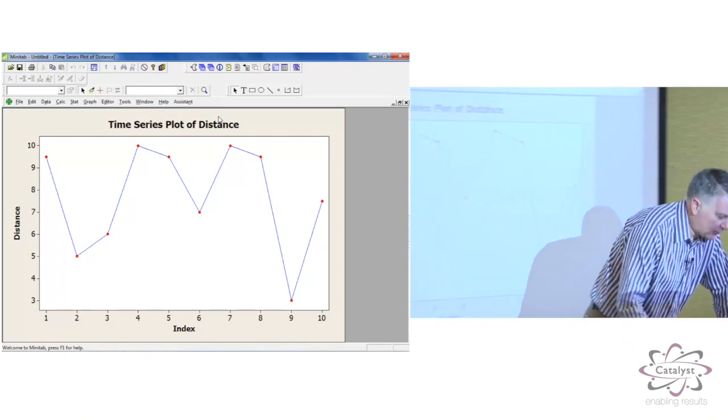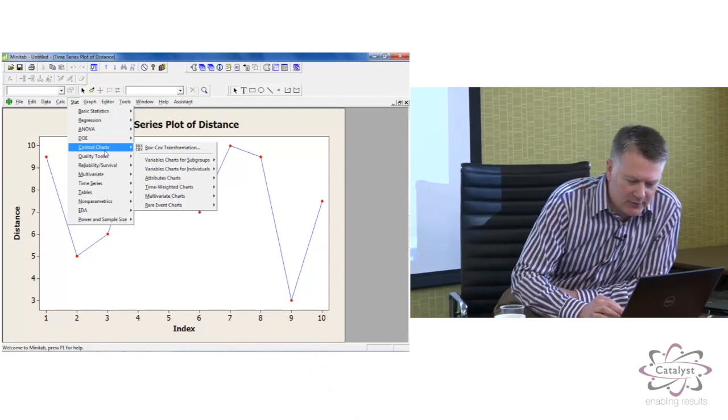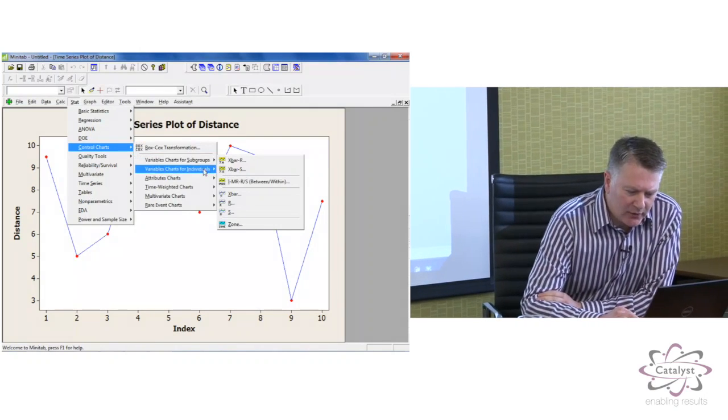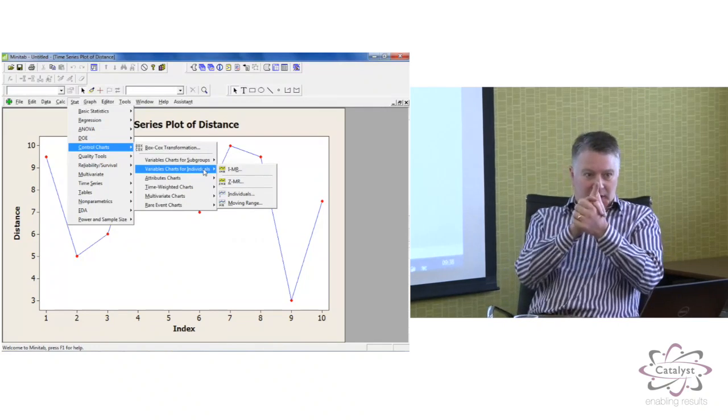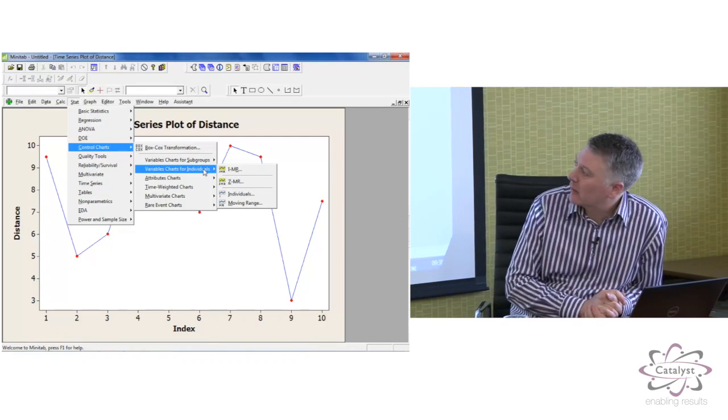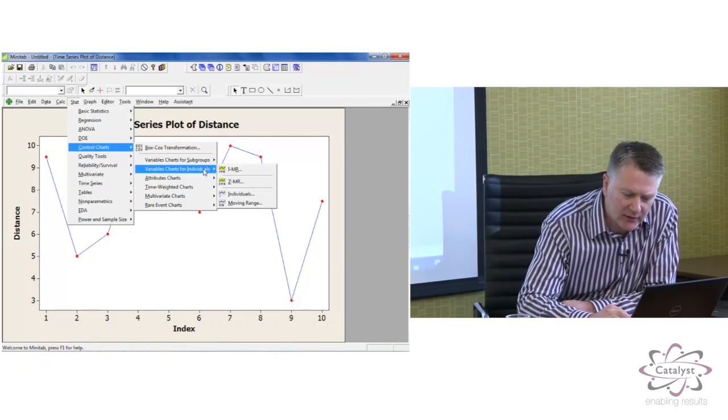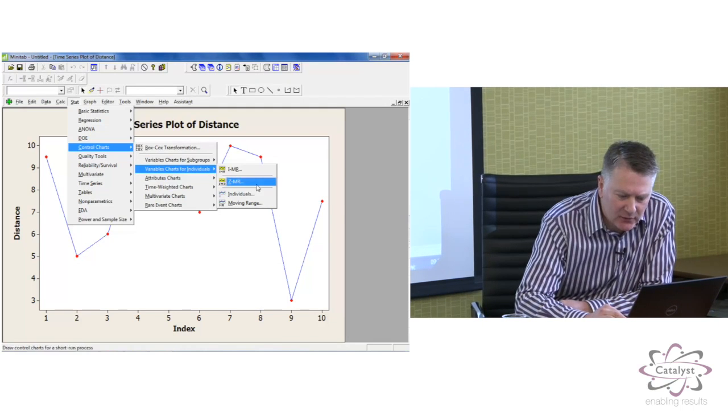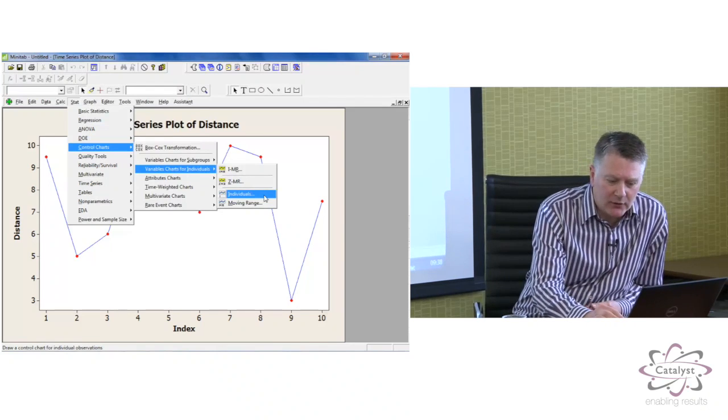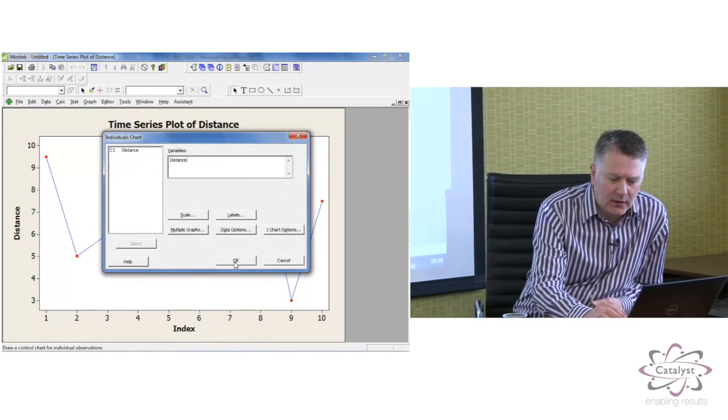To do a control chart in Minitab, it's STAT control charts. Now we are going to look at one particular control chart this session, which is called the Individuals Chart, or the XMR Chart. These other charts we will look at, or most of them we'll look at in future modules. And let's just look at the Individuals Chart on its own. And again, it's Distance, and OK.